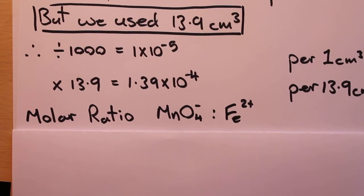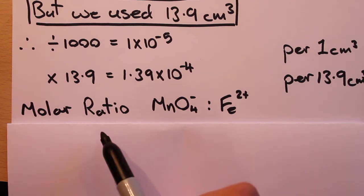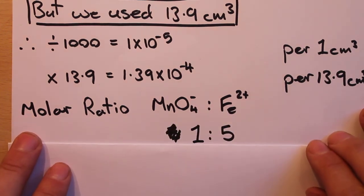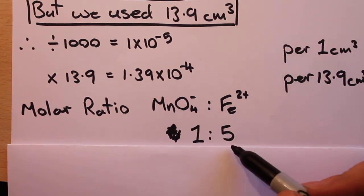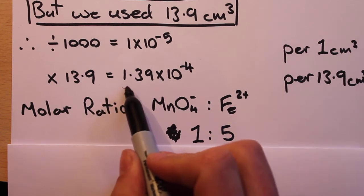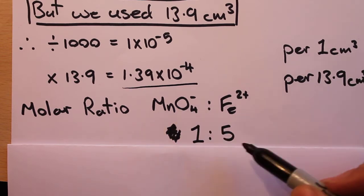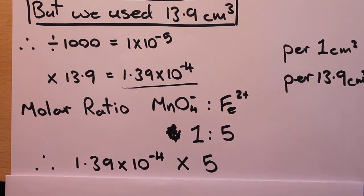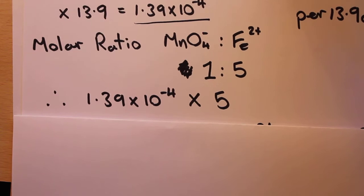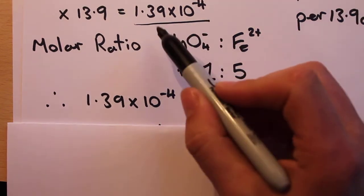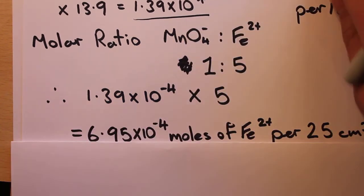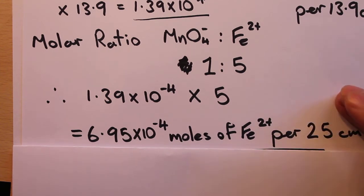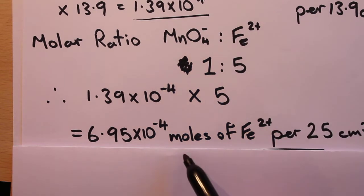This is where our molar ratio comes into play. We know the molar ratio of MnO4⁻ to Fe²⁺ is 1:5, so for every one mole of MnO4⁻ we have five moles of Fe²⁺. We have 1.39×10⁻⁴ moles of MnO4⁻, so we multiply by 5, giving us 6.95×10⁻⁴ moles of Fe²⁺.